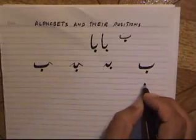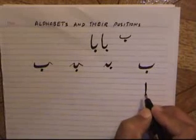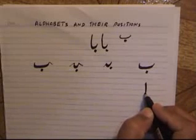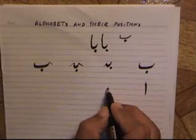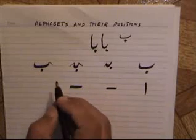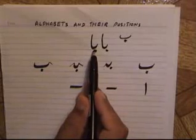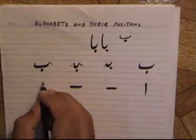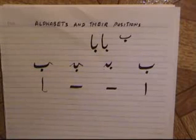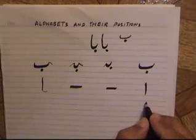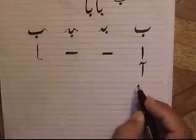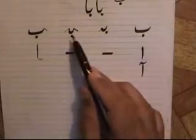First of all, we start with Alif. This is the independent position of Alif. There is no initial position for Alif, and there is no medial position for Alif. There is a final position for Alif, as you can see in the case of Baba — Alif is used in the final position only, and it has a connector at this place. Same is true for Alif Madd, aa.